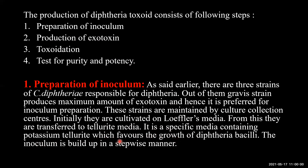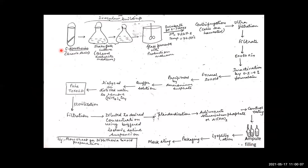The inoculum is built up in a stepwise manner. A loop full of culture, about 20 percent, is transferred from one step to the next shake culture flask containing blood tellurite medium. Twenty percent from each previous stage is transferred to the next stage, building up the inoculum quantity. Finally, the culture is placed in a glass fermenter with production medium, incubated for six to seven days at pH 7.2 to 7.8 and temperature 34 to 37°C.